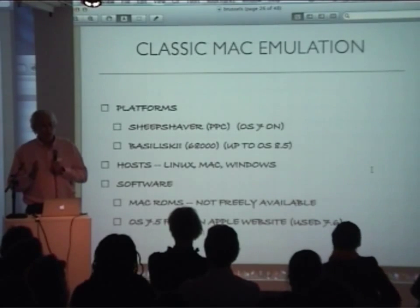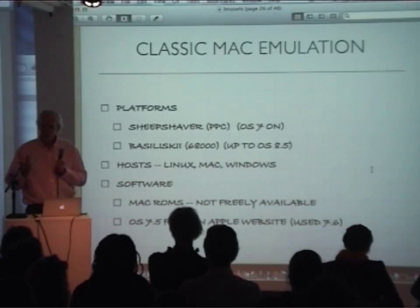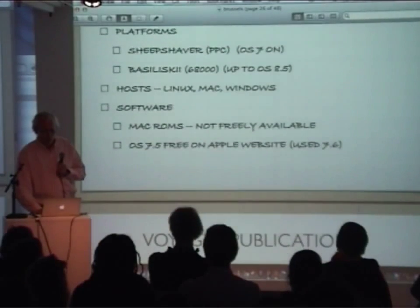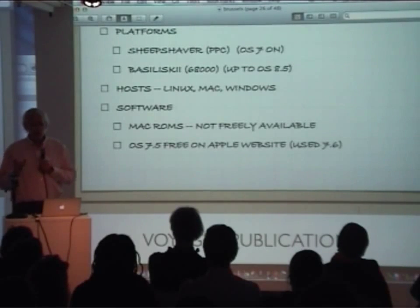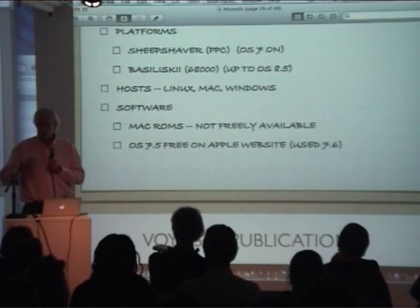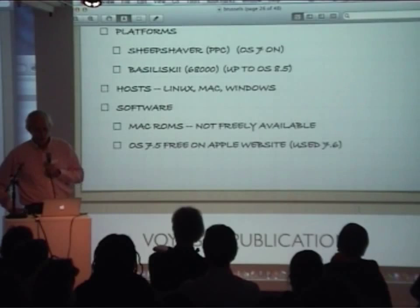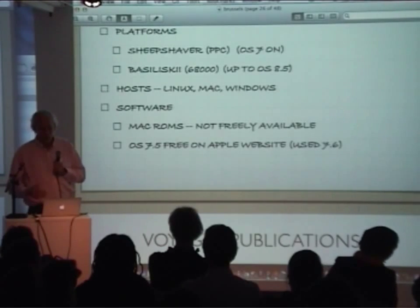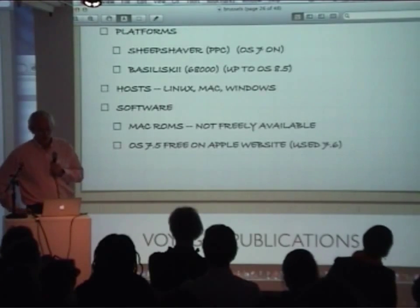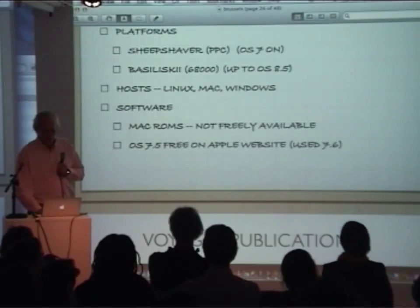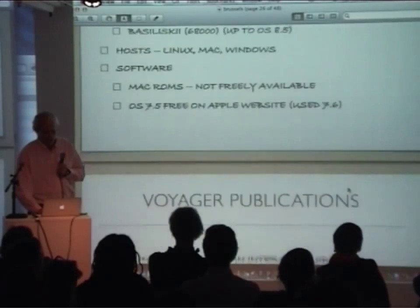There are two major Mac emulators: Sheep Shaver and Basilisk, which are related. They're somewhat fragile and not well supported anymore. Also in the Mac world, you depend upon access to the ROMs that were in the original machines. While people have made images of them, it's not clear that there's any legal right to use any of them — even some later ones distributed with the Mac OS on CD. There are legal issues associated with that.